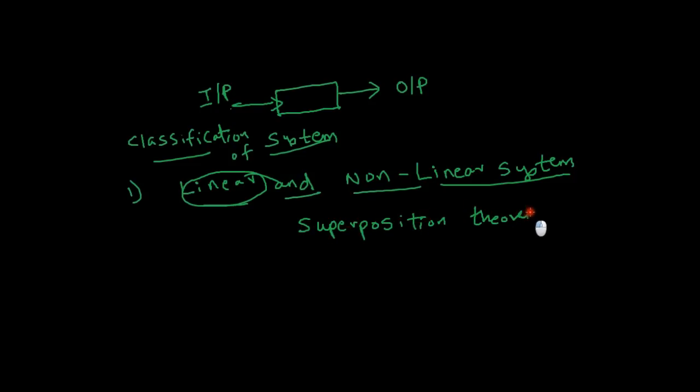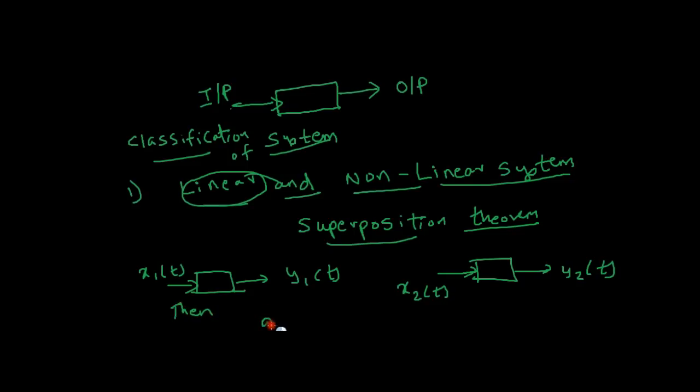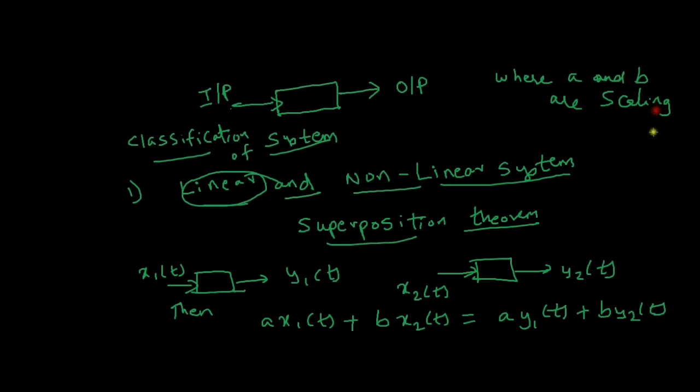A system is said to be linear if it follows the superposition theorem. The superposition theorem states that if x1 of t yields y1 of t and x2 of t yields y2 of t, then a x1 of t plus b x2 of t yields a y1 of t plus b y2 of t, where a and b are scaling factors. If any system follows the superposition theorem, then the system is called a linear system.